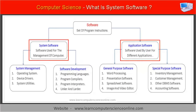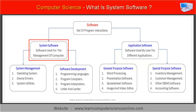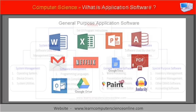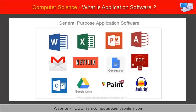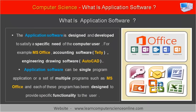The computer system essentially needs two types of software. The first type is called the application software, and the second type is called the system software. The application software is used by the computer user to perform various tasks on the system. For example, Microsoft Office is one of the most commonly used application software.